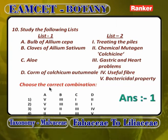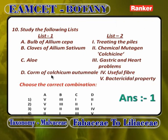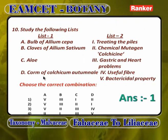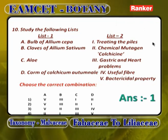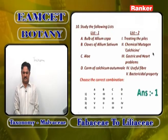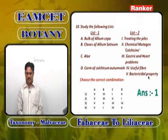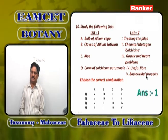A matching question: bulb of Allium cepa, cloves of Allium sativum, Aloe, and corm of Colchicum autumnale. Their economic importance: treating piles, chemical mutagen colchicine, gastric and heart problems, useful fiber, bactericidal property. Answer is 1: A is 5 (bulb of Allium cepa = bactericidal properties).